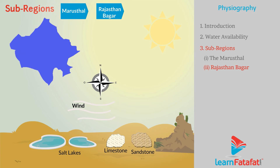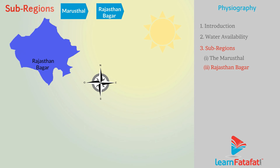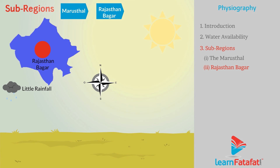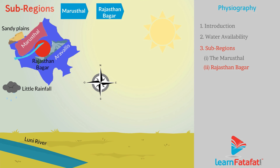Rajasthan Bagar is characterized as a semi-arid transitional zone — a region which receives very little rainfall — lying between the western sandy plains of Marusthal and the eastern Aravalli mountain range. It is a plain of the Luni river and Ghaggar river.